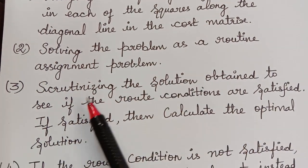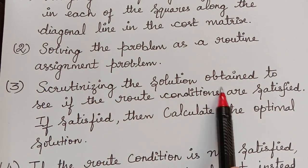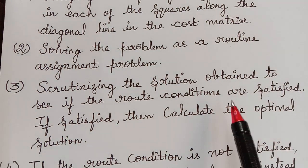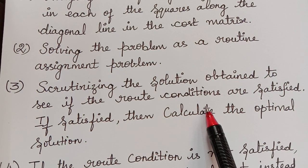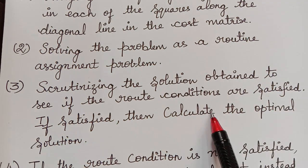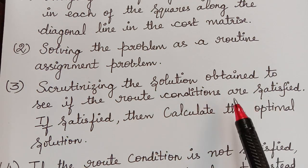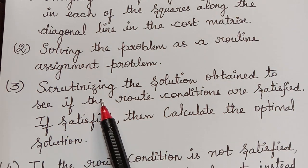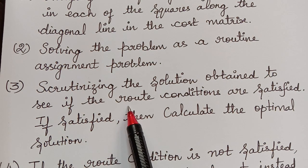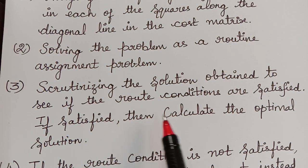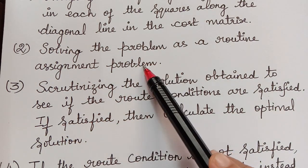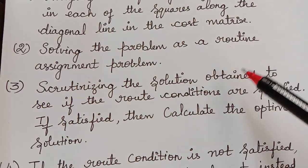So after solving we have to scrutinize the solution obtained to see if the route conditions are satisfied. So what are the route conditions? Just now we saw we have to begin from one city which will be the headquarters and we have to return back to that same city. And second route condition is the remaining other cities should be visited only once. So these two conditions must be satisfied. So we have to check for it. So when we check, if the route conditions are satisfied then we have to calculate the optimal solution. That is, the solution of the assignment problem becomes the solution of the traveling salesman problem also.